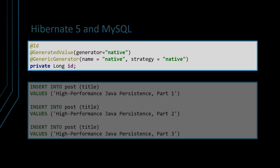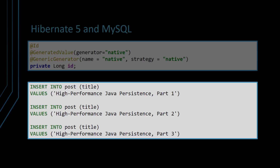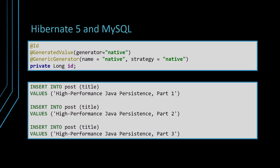So, when inserting the same 3 post entities on MySQL, Hibernate is going to issue the following SQL insert statements. Notice that the use of the default keyword is database specific. For instance, Hibernate will use it for HyperSQL, but omit it for MySQL. Nevertheless, Hibernate used the identity generator instead of the table one, since we explicitly opted for the native identifier generator.